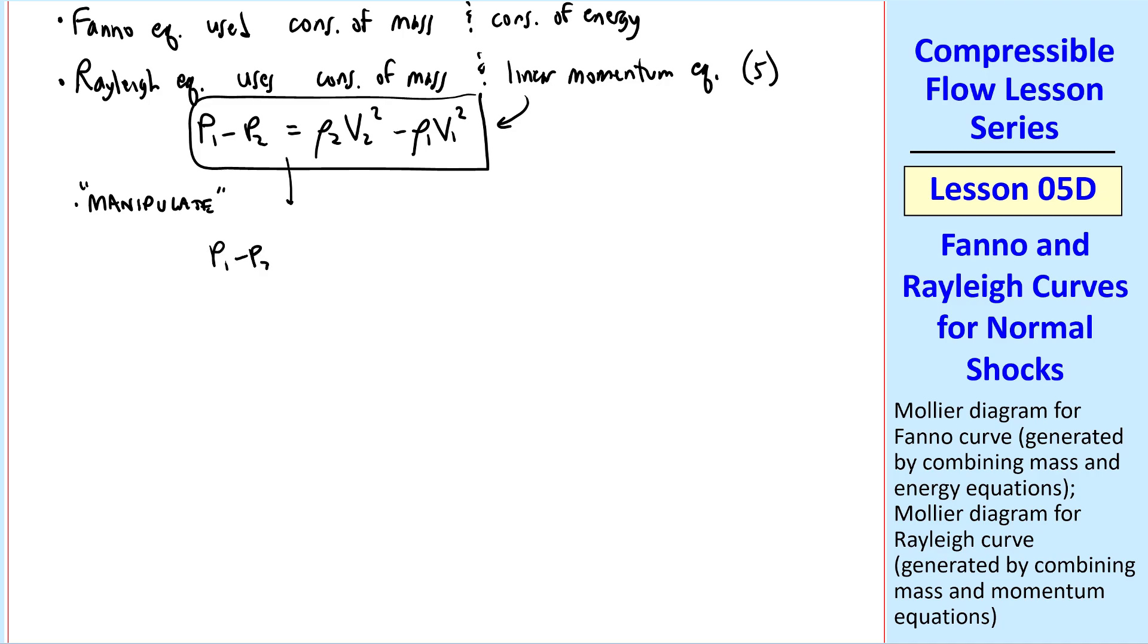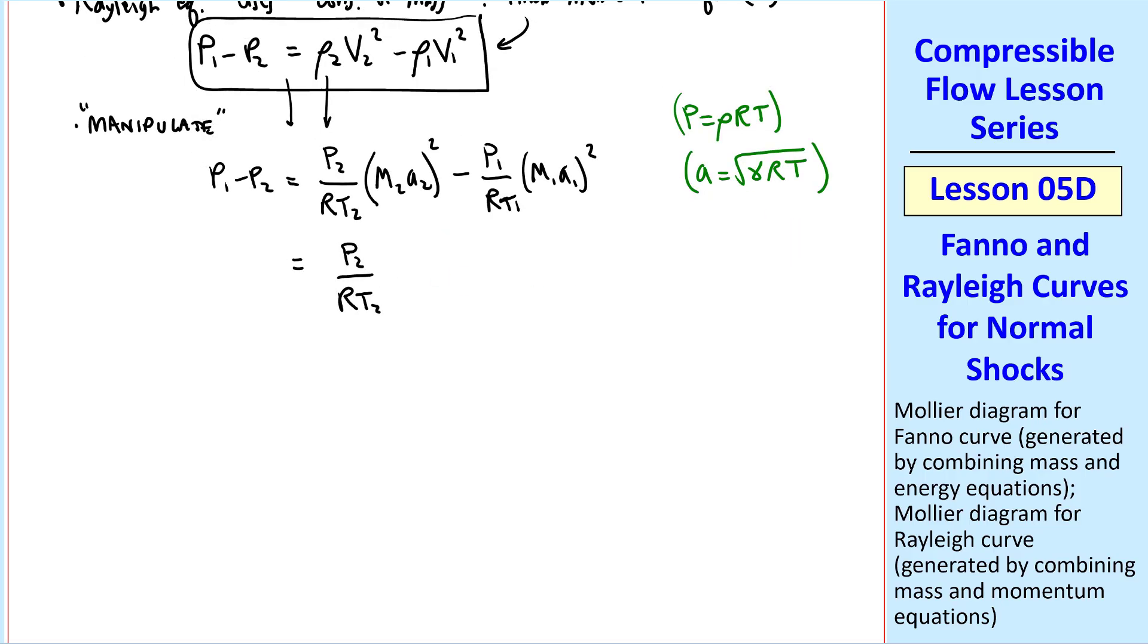Now let's manipulate. P1 minus P2 is rho2 V2 squared minus rho1 V1 squared. rho2 is P2 over RT2 by the ideal gas law, and then V2 is M2A2, and that's squared. And we do the same thing with the term on the right side, where we've used the ideal gas law. And now, use the equation for speed of sound, here and here, and noting that this is squared. We get P2 over RT2, M2 squared, gamma RT2, minus the same thing with subscripts 1. Notice now that the R's cancel, and the temperatures cancel.